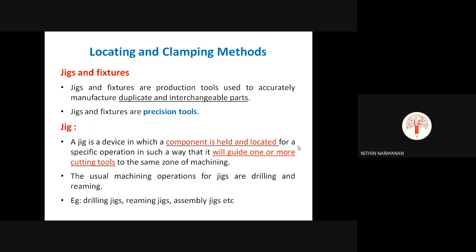Products obtained from manufacturing processes like casting and forging will often require further finishing by way of machining. Even if you manufacture by casting, there will be certain machining allowances left. After casting, we will not get a highly surface-finished final component. We get the shape dimensionally, but further machining is needed to achieve the required dimensional accuracy.